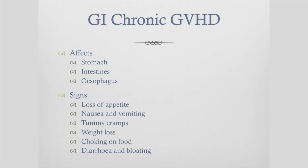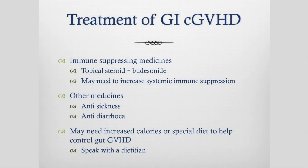GVHD also affects the whole gastrointestinal tract — the stomach, intestines, and esophagus or swallowing tube. Signs may be loss of appetite, nausea or vomiting, tummy cramps, and weight loss. If it affects your esophagus you may have difficulty swallowing tablets or choking on food, and it can also cause diarrhea and bloating. Treatment is immune-suppressing medicines — topical steroids, that non-absorbable steroid that bathes your intestine, is useful here — but we may also need to increase your systemic immune suppression. Supportive care medicines like anti-sickness and anti-diarrhea medicines may be needed, as well as increased calories or a special diet, and our dietitian is really useful in helping with these.